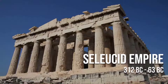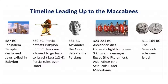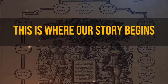The Seleucid Empire or the Greeks, 312 BC to 63 BC, and this is where our story really begins. The timeline leading up to the Maccabees: 587 BC the Jerusalem temple was destroyed and the Jews were taken to Babylon; 539 BC Persia defeats Babylon and the Jews are allowed to go back to Israel. Donald Trump was actually compared to King Cyrus, because Cyrus gave the order allowing the Jews to go back and start building. 331 BC Alexander the Great, the Macedonian, defeats the Persians; after Alexander's death his generals fight for power and three kingdoms emerge — Egypt, Asia Minor (the Seleucids), and the Macedonians. From 311 to 164 BC the Seleucids rule over Israel.